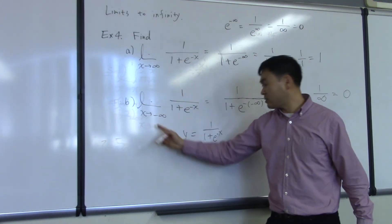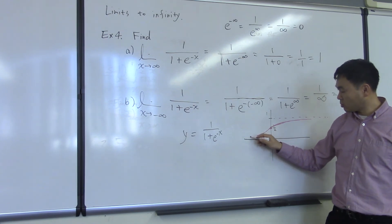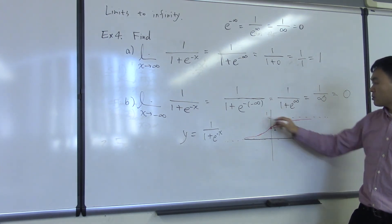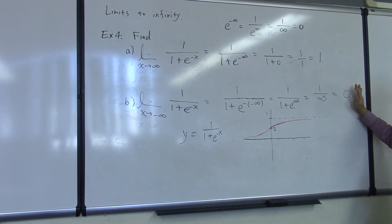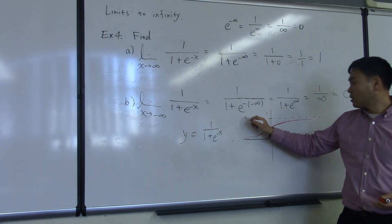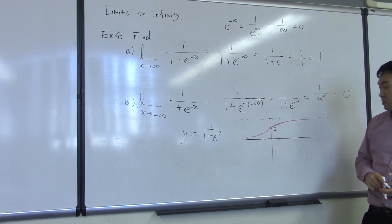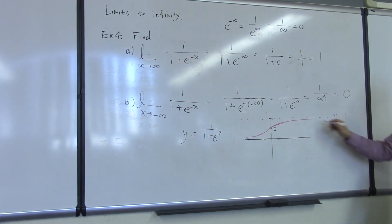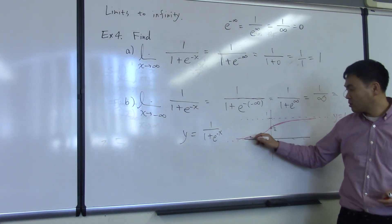Whereas if you go to negative infinity — meaning to the left on the graph — it's going to go down, but it'll get closer and closer to 0. So in other words, the limit as x goes to infinity or to negative infinity individually tells you the horizontal asymptote of the graph. If you get a value for either of these, that gives you a horizontal asymptote. So the graph of y equals 1 over 1 plus e to the negative x has two horizontal asymptotes: y equals 1 as the graph extends to the right, and y equals 0 as you go to the left.